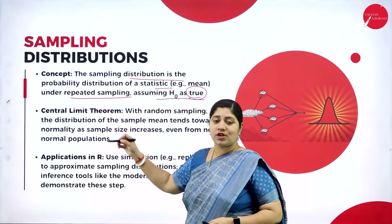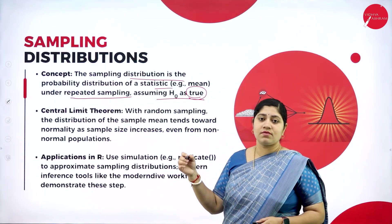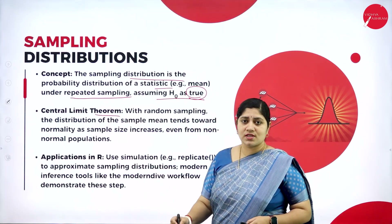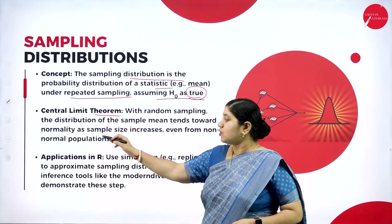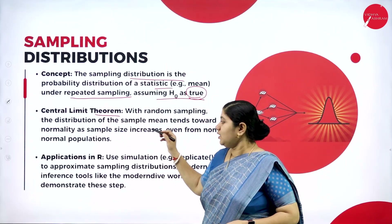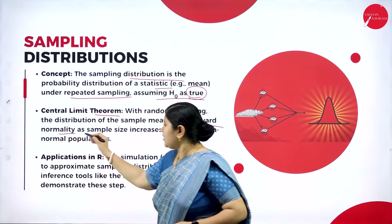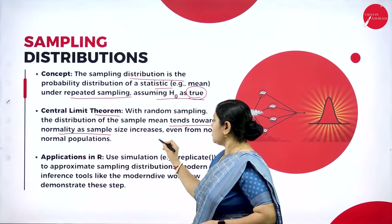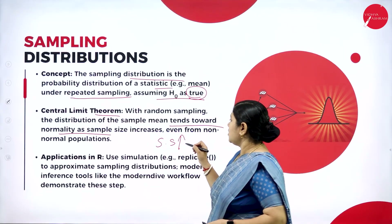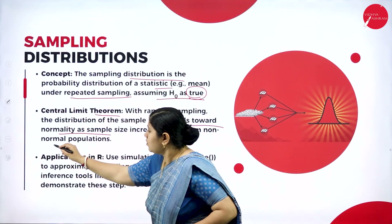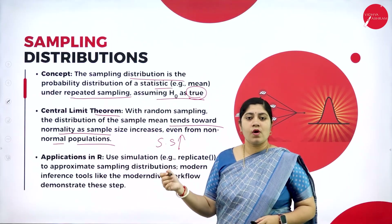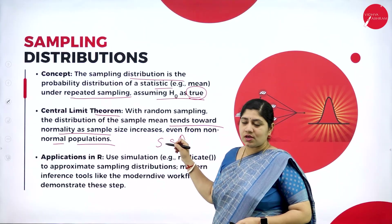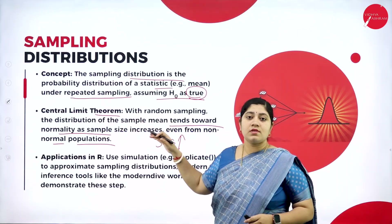The next very important theorem when we deal with samples is the central limit theorem. This theorem states that with random sampling, the distribution of the sample mean tends towards normality as sample size increases — even from non-normal populations. That is all about the central limit theorem.